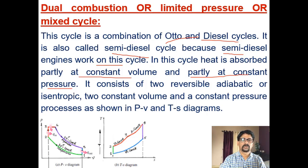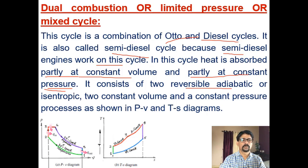It is a combination of Otto and Diesel: partly at constant volume — that is part of the Otto cycle — and partly at constant pressure — that is part of the Diesel cycle. It consists of two reversible adiabatic (isentropic) processes, two constant volume processes, and one constant pressure process.